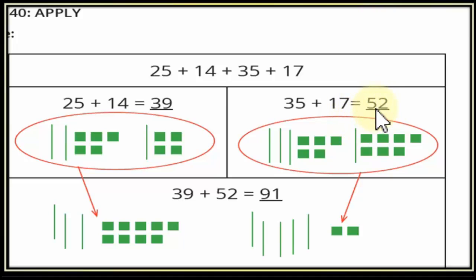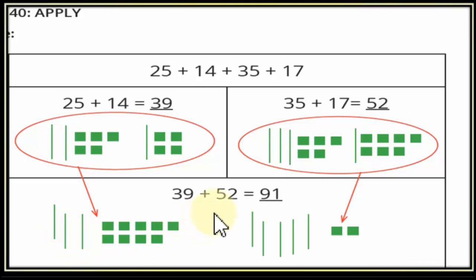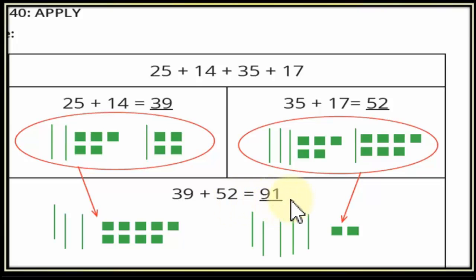كده بردو المسألة مخلصتش — أنا جبت مجموع عددين لوحدهم ومجموع عددين لوحدهم، وعايز أجيب مجموع الأربع أعداد. لما يتجمعوا على بعض: هاجمع 39 مع 52. 39 دي 3 tens وـ9 في الـones، و52 دي 5 tens وـ2 في الـones. الـ9 دي محتاجة 1 بس من الـ2 عشان تبقى 10. الـ2 عبارة عن 1+1: 1 في الـones، والـ1 التانية زادت على الـ9 عملت 10. الـ10 دي هنجمعها على 3 يبقى 4، والـ4 والـ5 يبقى 9. يعني الناتج النهائي 91.